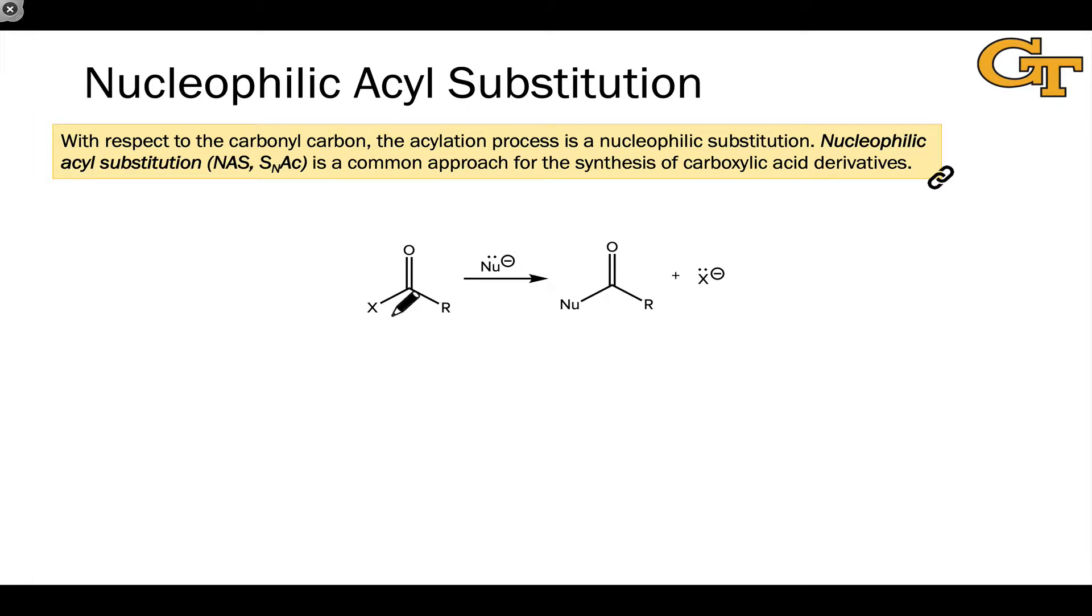By now we're pretty familiar with the idea that the acylation process amounts to nucleophilic substitution. You'll hear it referred to as nucleophilic acyl substitution, NAS, or SNAC, where the subscript N indicates it's a nucleophilic substitution, one nucleophile for another, and AC indicates that an acyl group is involved.